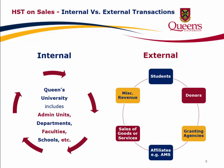HST on Sales — internal versus external transactions. Internal for Queen's University includes admin units, departments, faculties, schools, etc. External would include students, donors, granting agencies, affiliates (for example, AMS), sales of goods or services, and miscellaneous revenue.